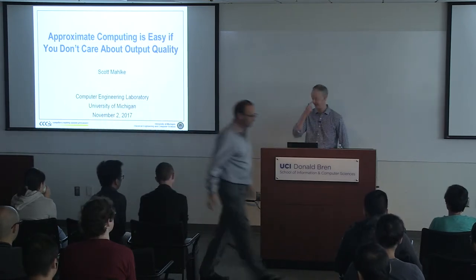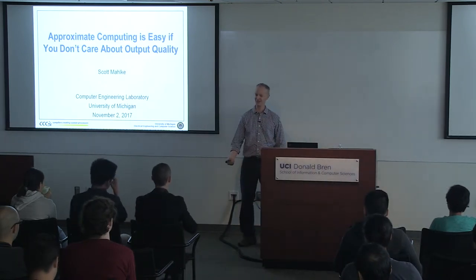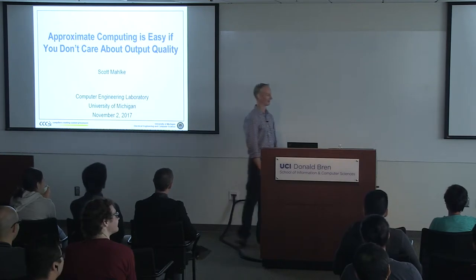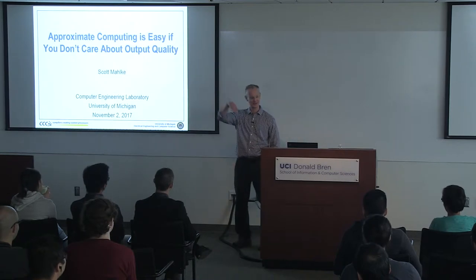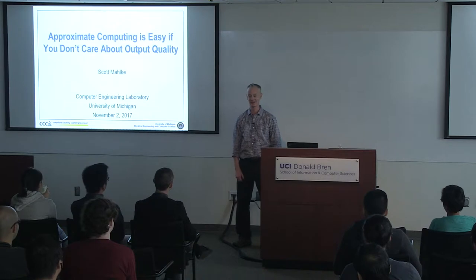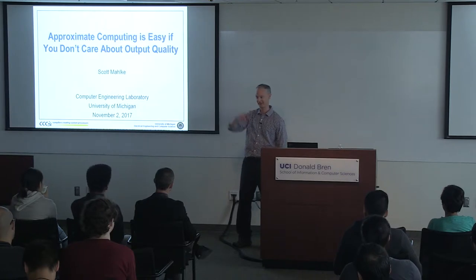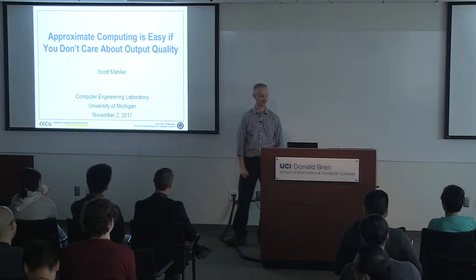All right, thanks a lot, Alex. So I'm from Michigan, and I was told it was sunny here, but it's raining out today, so I guess I brought the bad weather with me. Currently in Michigan it's probably about 40 degrees as the high, and we typically get snow sometime in November. December, January, February are pretty miserable, so those of you living here in Southern California don't know what real weather is until you go to the Midwest.